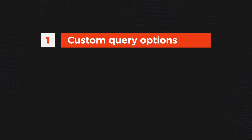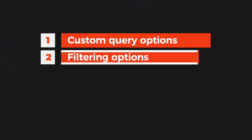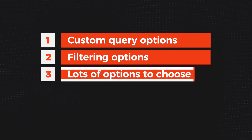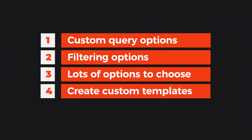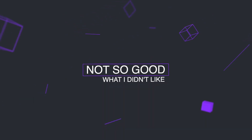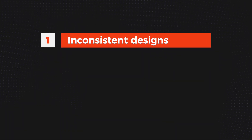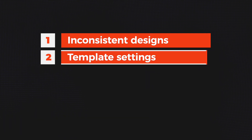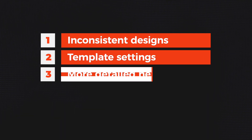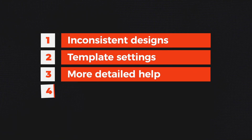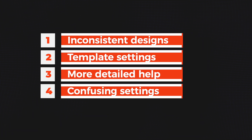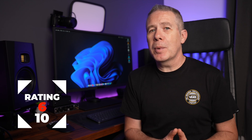What I like: custom query options for each of the pre-built listings, filtering options included both horizontally and vertically, plenty of options to choose from, and the ability to create your own template files for key WooCommerce pages. What I don't like: the pre-built designs feel a little amateur, there's an inconsistent approach to setting templates, the help documentation needs a lot more information, and there's a confusing method for using custom templates for certain key pages. For this, I'm going to give it 6 out of 10. There's a lot to like about WC Designer, but the plugin is let down by the confusing template handling, some poor pre-built designs, and documentation that really needs to be fleshed out.